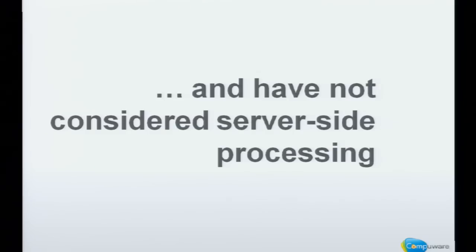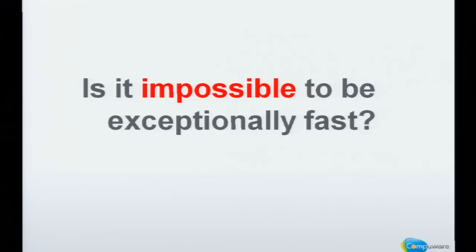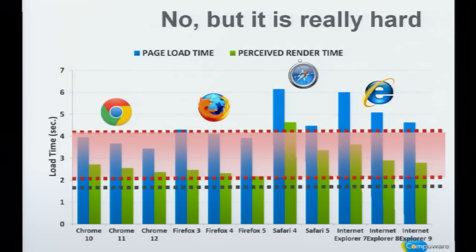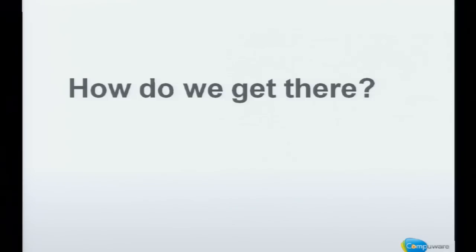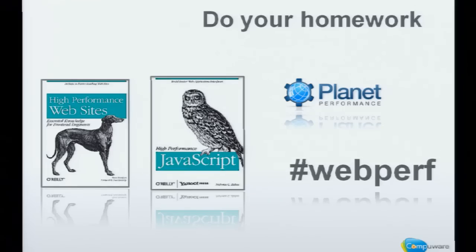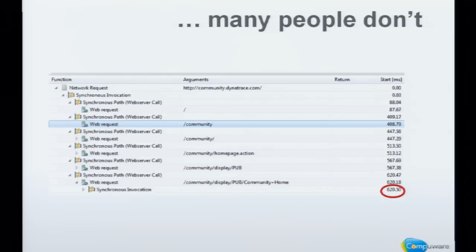So the question is: is it impossible to be exceptionally fast? The answer is no, it's not impossible, but it's really hard. As this Gomez study shows, testing 200 websites around the globe for how fast they respond — while they do a good job keeping within the four-second boundary, none of them are really in the one-to-two-second range. So how do we get there? First, we have to do our homework: read Steve's books, go to PerfPlanet, follow WebPerf on the web. The reality is a lot of people don't do these easy things — for example, sites still have redirects, just losing 500 milliseconds out of our precious 1.6 seconds.